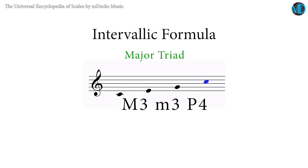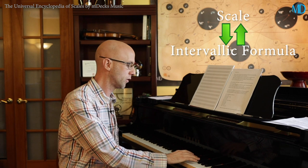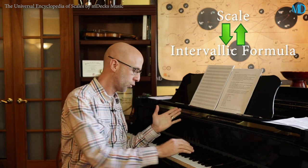A major triad is a major third, minor third, perfect fourth. In the Universal Encyclopedia of Scales, we wanted these intervallic designations to be consistent across the board and one-to-one, so we could always correlate an intervallic formula with a scale and vice versa, regardless of enharmonic designation or diatonic consistency. What that means is: if I have a distance between two notes, that three half-step distance will always be designated as a minor third, regardless of whether the second note is called D sharp or E flat.